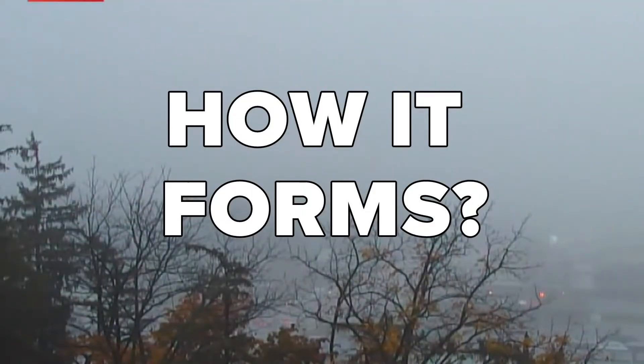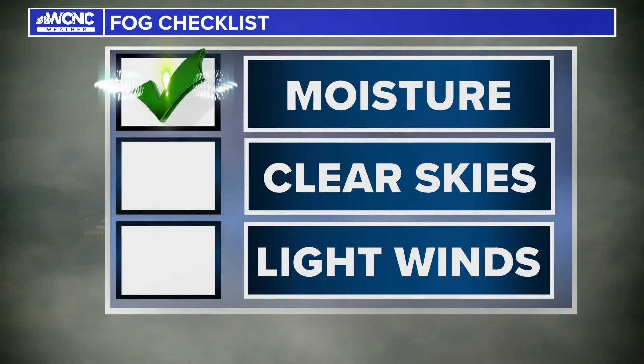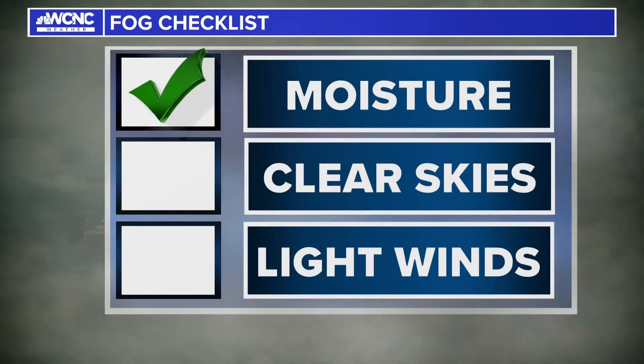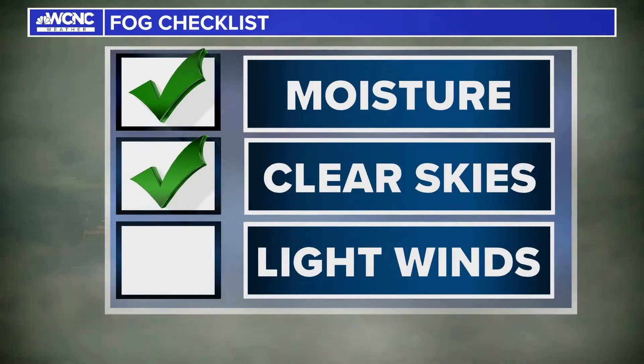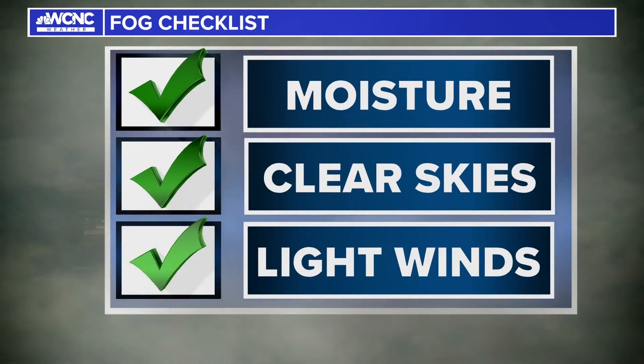Here's what fog needs to form. One: a wet ground where water evaporates into water vapor, then condenses into fog. Two: a clear sky. And number three: calm winds.